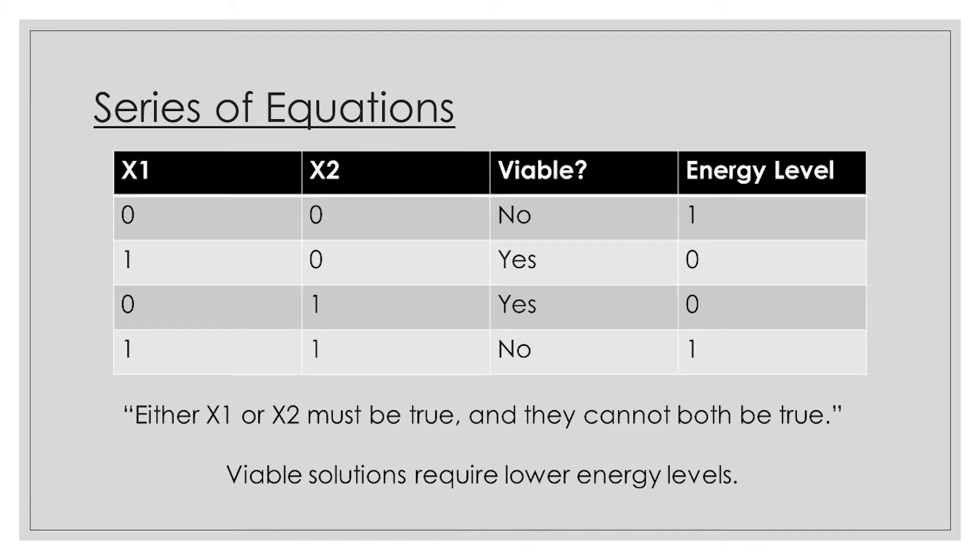The way annealers determine whether a solution is optimal or suboptimal is by reading the energy levels of a potential equation. In the last video, I discussed how quantum annealers create a multidimensional energy graph out of their matrix inputs and then find the optimal solution by finding the lowest point. By the same logic, we're going to want the viable possibilities to have a low energy, and the two solutions that do not fulfill our condition to have a higher energy. For simplicity's sake, let's give our two viable possibilities energies of 0, and the solutions that do not satisfy the condition energy values of 1.